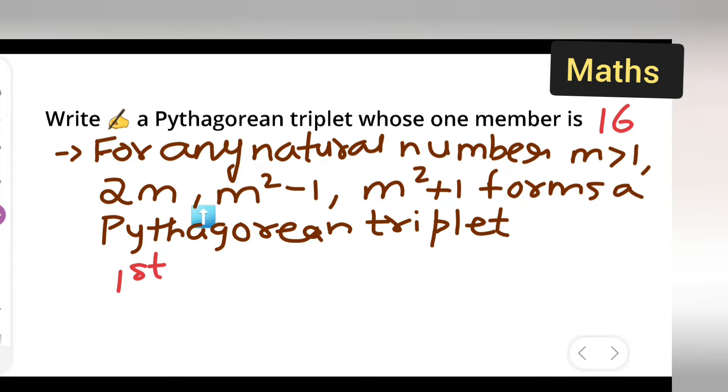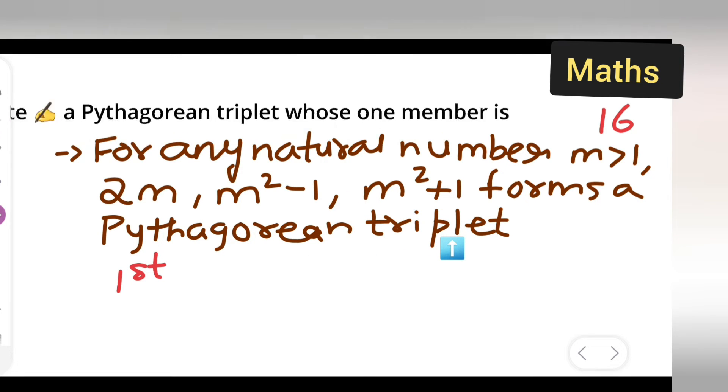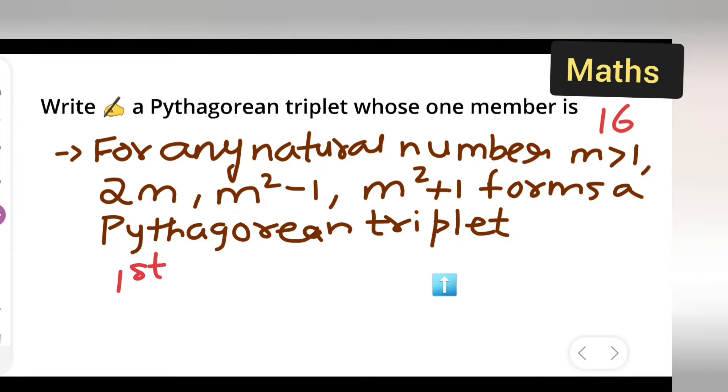Now, 2m, m² minus 1, m² plus 1. These are very important, three important Pythagorean triplet formulas. These three are going to form a Pythagorean triplet and they are very important. So take down this.